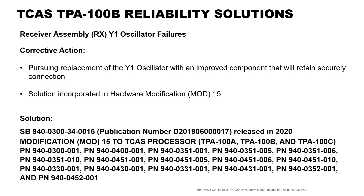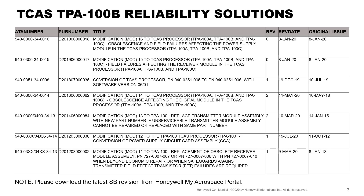As a corrective action, Honeywell is pursuing replacement of the Y1 oscillator with an improved component that will retain a secure connection with the receiver board when exposed to substantial vibrations and environmental stresses. The solution incorporated is hardware mod 15, and can be implemented through service bulletin 940-0300-34-0015. A list of service bulletins that bring reliability improvements, and some for obsolescence, is also available. Please download the latest SB revision from the Honeywell MyAerospace portal.